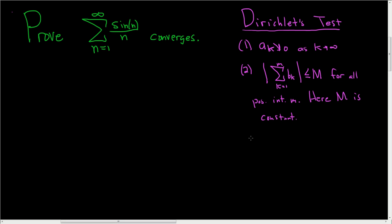If both of these conditions hold, then Dirichlet's test tells us that the infinite sum of the product of a_k and b_k actually converges. So in this proof, we're just going to carefully use Dirichlet's test to show that this infinite sum converges.